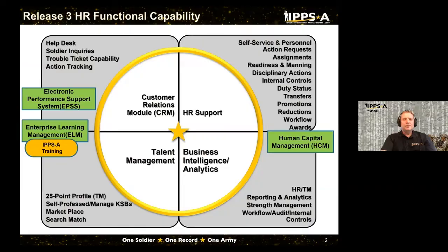What you see in front of you right now is our quad chart, we call our bullseye chart. It really breaks down what IPSE capabilities are going to be delivered as we go live. Many of you have seen this probably throughout other forums, but I'm just going to go over it really quickly.